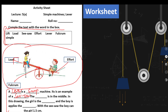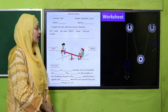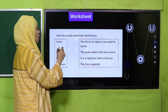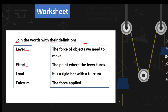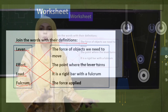Continue filling the blanks: 'The blank is in the middle' — the fulcrum is in the middle. 'In this drawing, the girl is the load and the boy applies the effort. With the seesaw, the boy can blank the girl' — lift the girl. Pause the video and complete the worksheet. Now join the words with their definitions: lever — a rigid bar; effort — the force applied; fulcrum — the point where the lever turns; load — the force of the object we need to move.